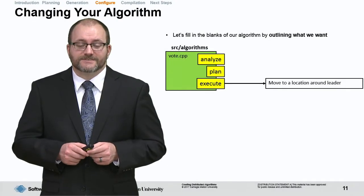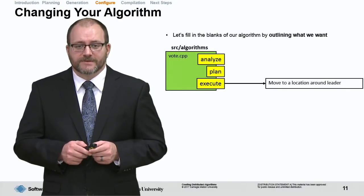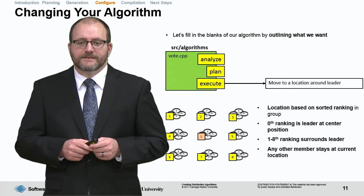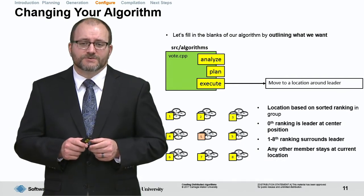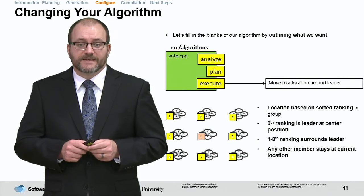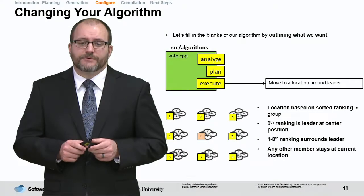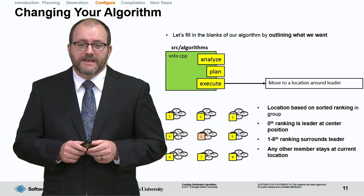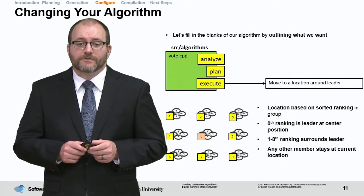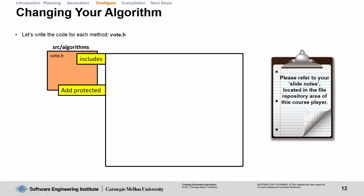This may sound daunting, so let's visualize what exactly we're going to implement in the vote algorithm. Location is going to be based on a sorted ranking in the allies group. The 0th ranking is going to be the leader, and he's at the center position. Everyone else will surround the leader. Any other agent not in the 0th through 8th ranking is going to stay wherever they're currently at. Now that we have a good visual and a good understanding of what the vote algorithm is supposed to do, let's implement it.